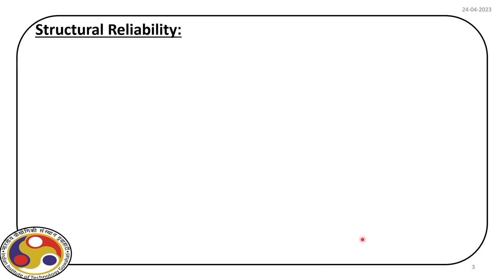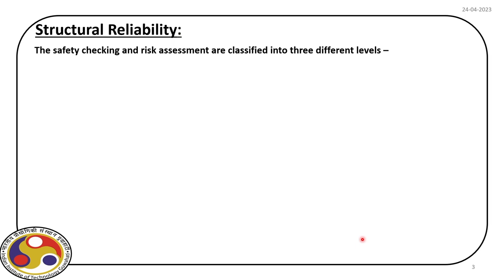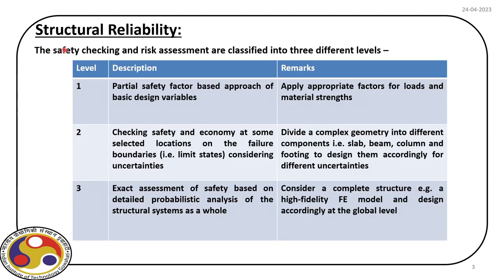This is a safety checking format that has three levels. The first level is the partial safety factor based approach that we often encounter in design guidelines. In this approach, we apply load factors as well as factors associated with material strength. In general, we overestimate load and underestimate strength through these factors, ensuring the factor of safety is more than one, assuming the reserve strength will meet the uncertainty when the structure is exposed to its environment.